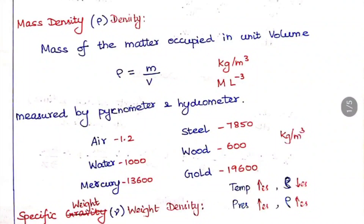Density is usually measured using a pycnometer and hydrometer. Key values to remember: for air it is 1.2 kg/m³, for water it is 1000 kg/m³, for mercury it is 13,600 kg/m³, for steel it is 7850 kg/m³, for wood it is 600 kg/m³, and for gold it is 19,600 kg/m³. At minimum, memorize the values for air, water, and mercury.